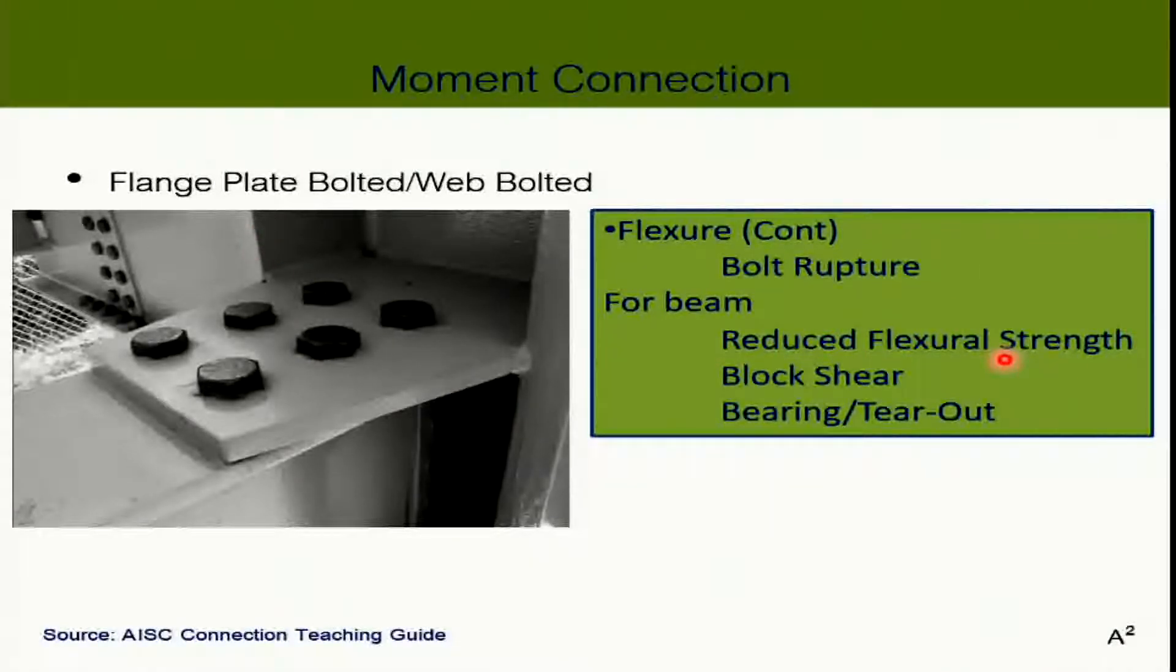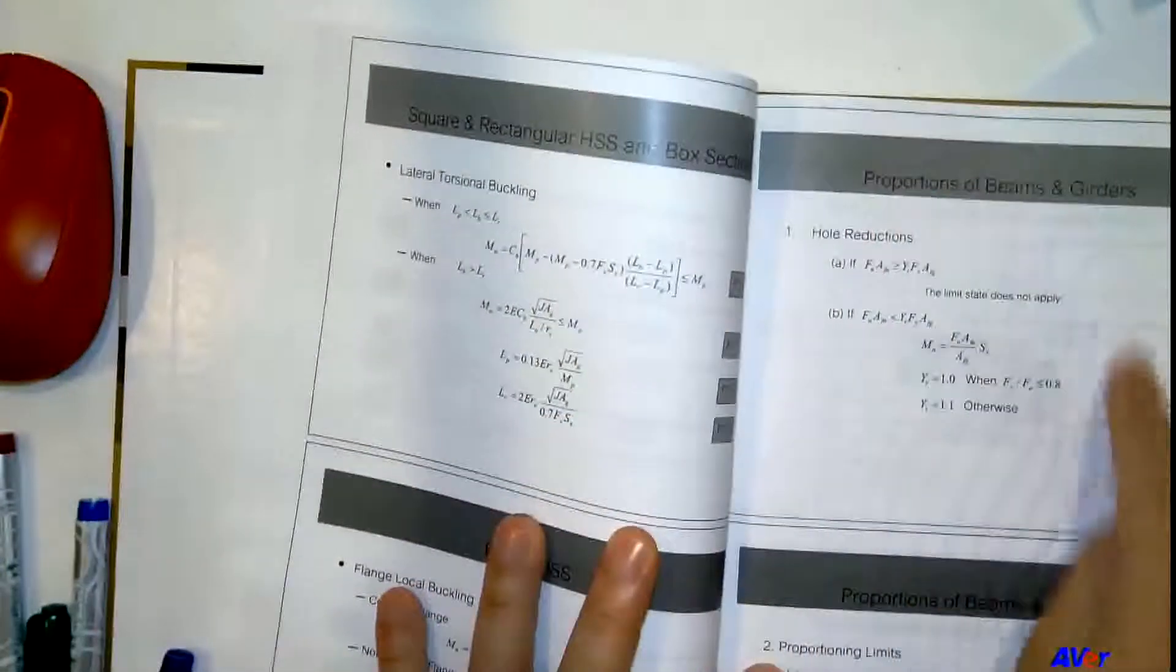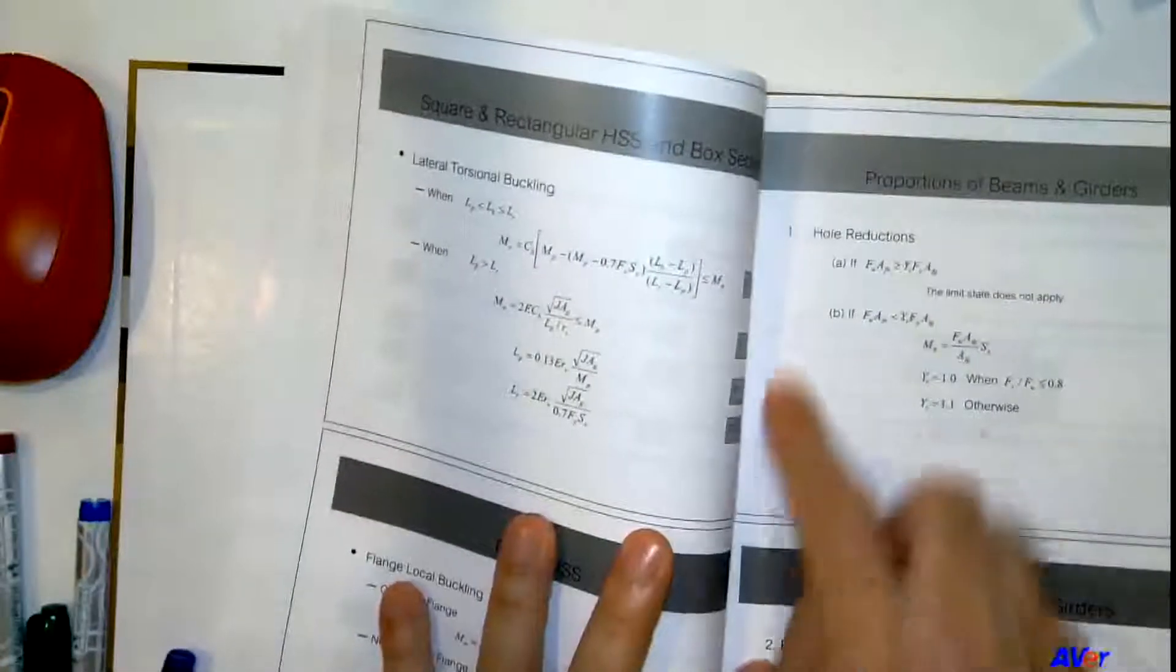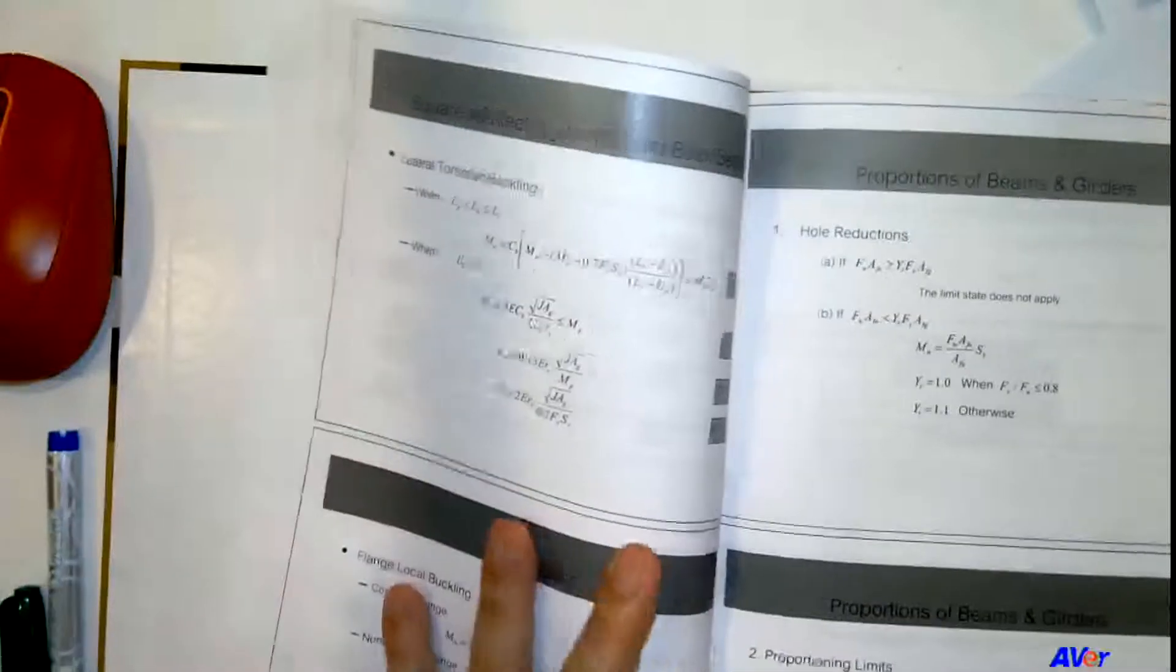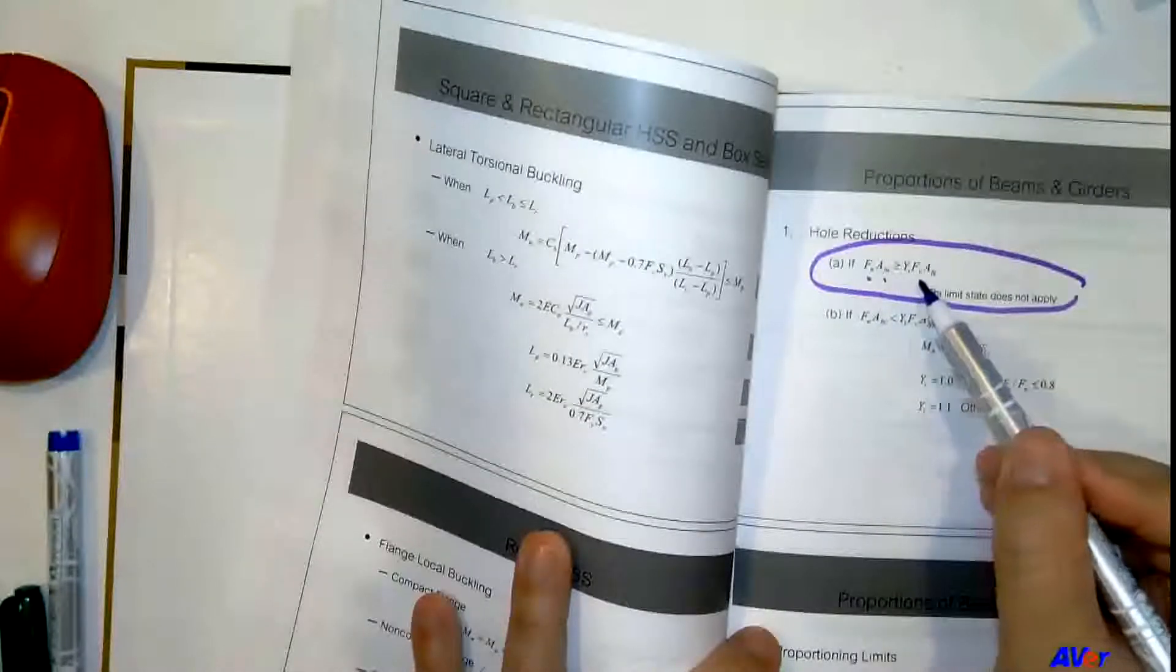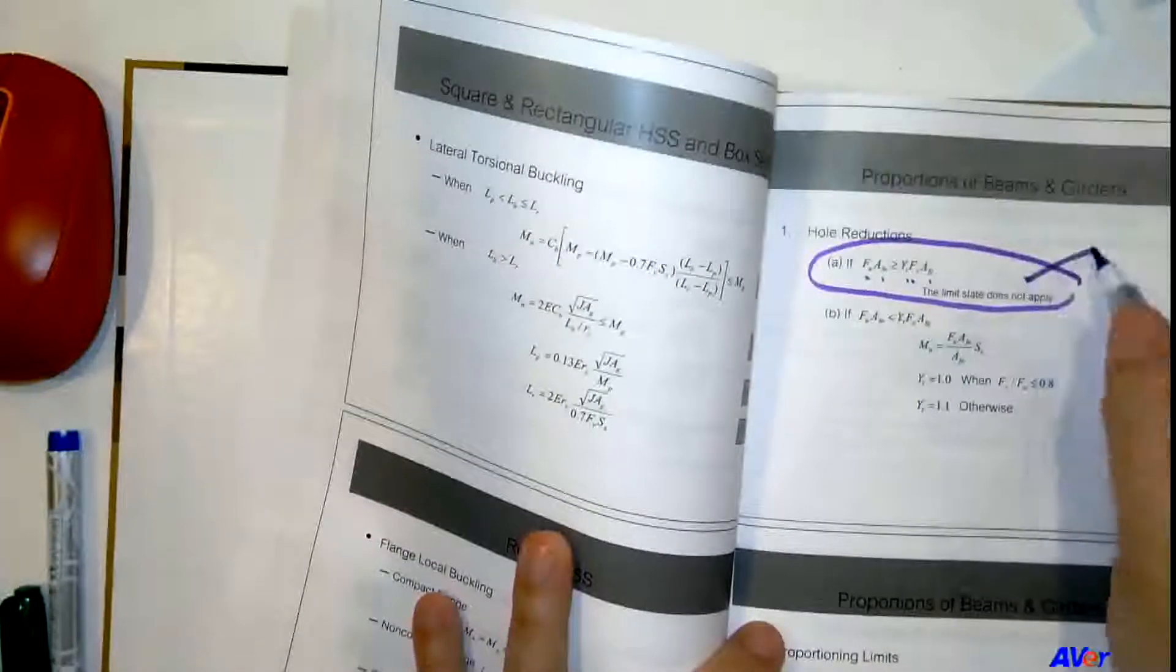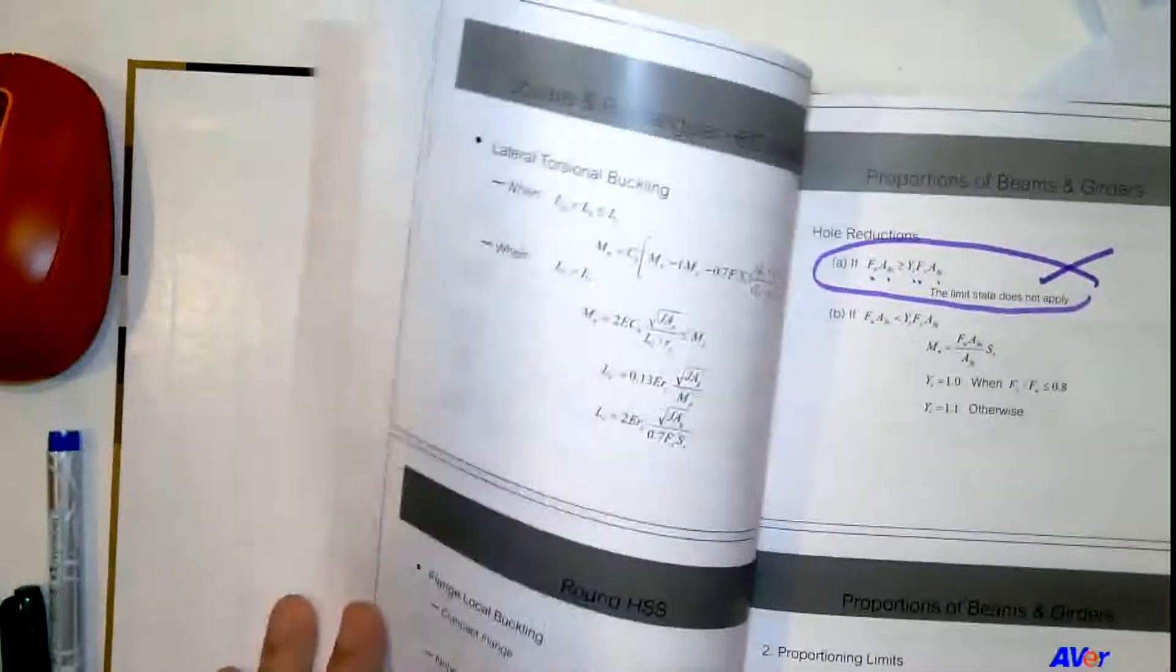You will need to go back to the flexural member that we have yesterday - the page about the proportion of beam and girder with the hole reduction. We check according to this to see if we have too many holes. If you have too many holes, you may have to reduce the flexural strength of the beam. And this limit state does not apply when you have that one. Check the F_U A_net of the flange and it's still greater than F_Y A_gross of the flange. That is fine. We don't have to worry about the reduced flexural strength.